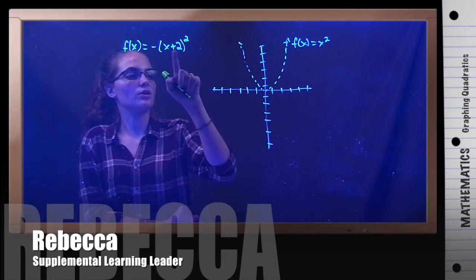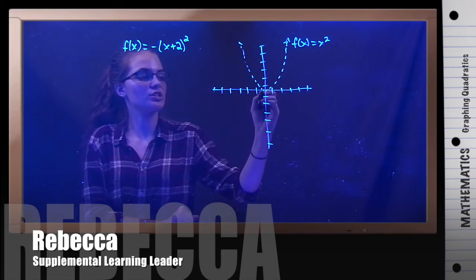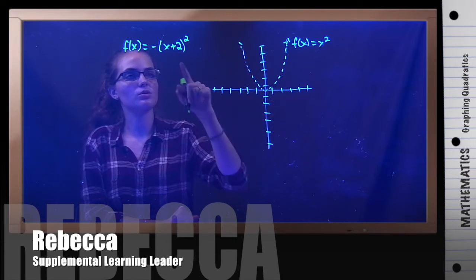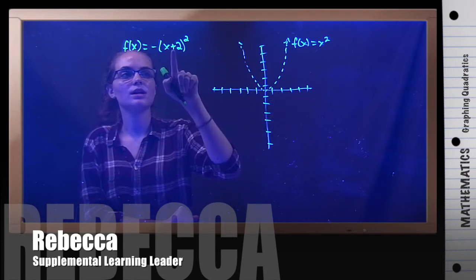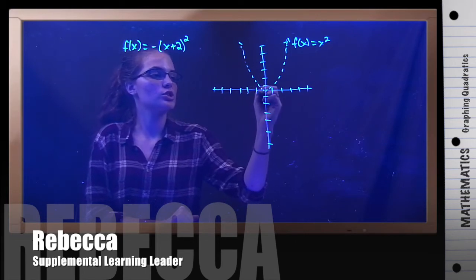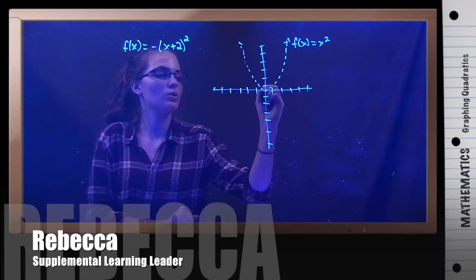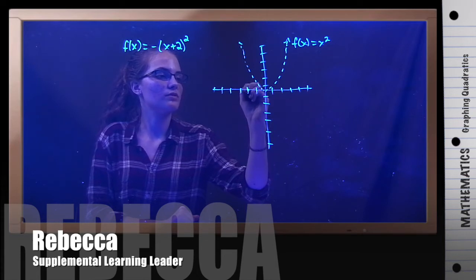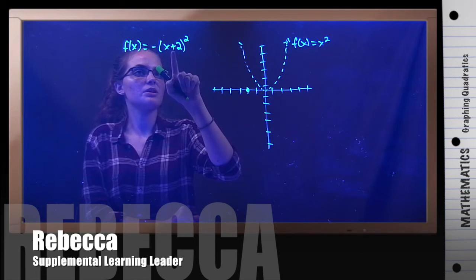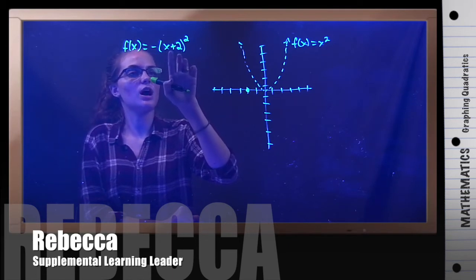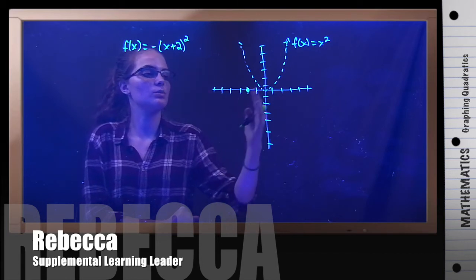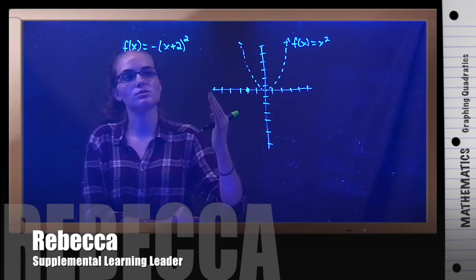But because it's added on the inside, you're going to shift it either to the right or the left, depending on whether this is positive or negative. And because this is positive, you're actually going to go to the left. So our vertex is shifting from the origin to the left, two units. You can always think about it when it's inside the parentheses, shift it the opposite way that you would think. So even though this is positive, you would think it would go to the right, but it actually goes to the left.